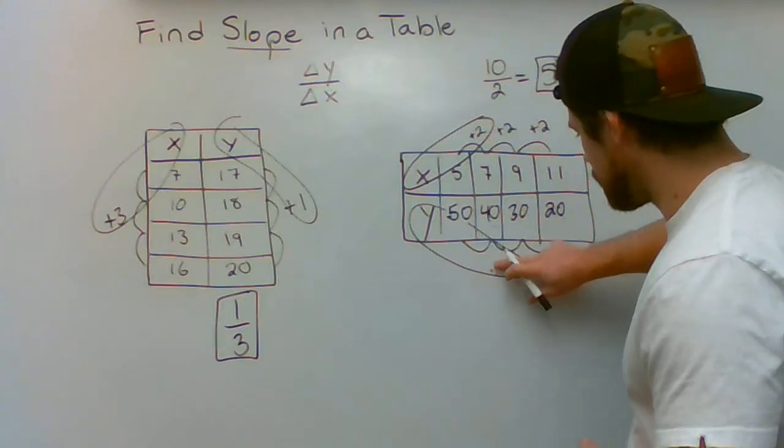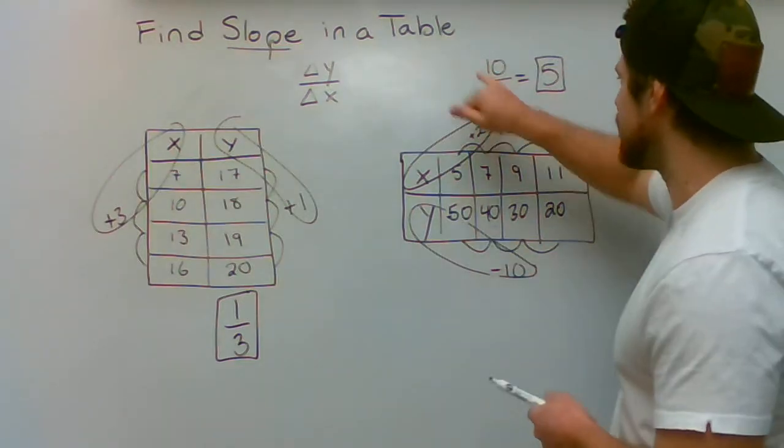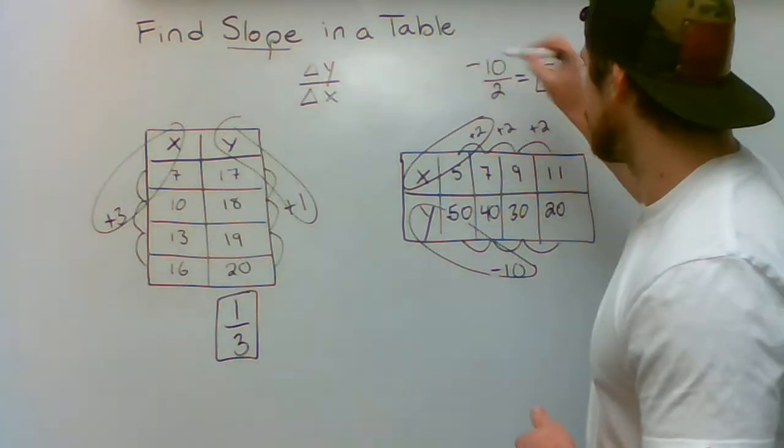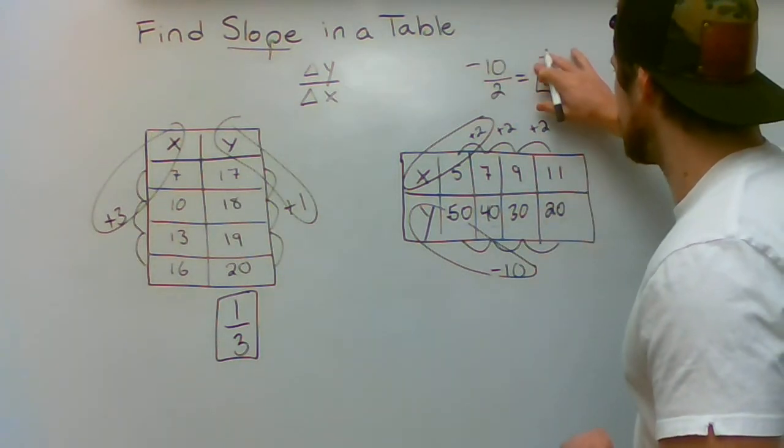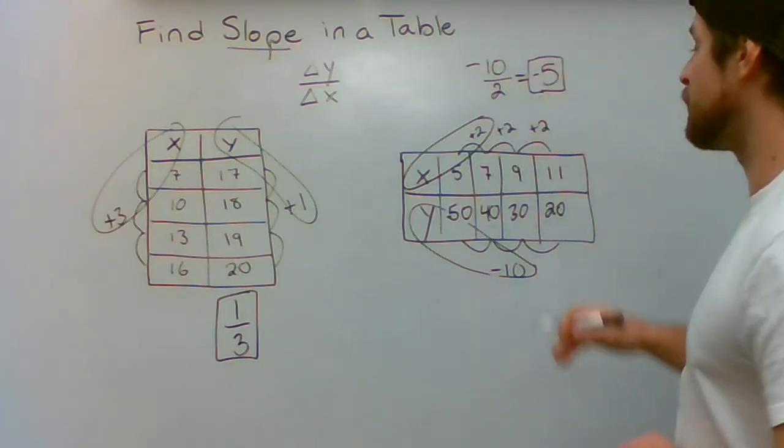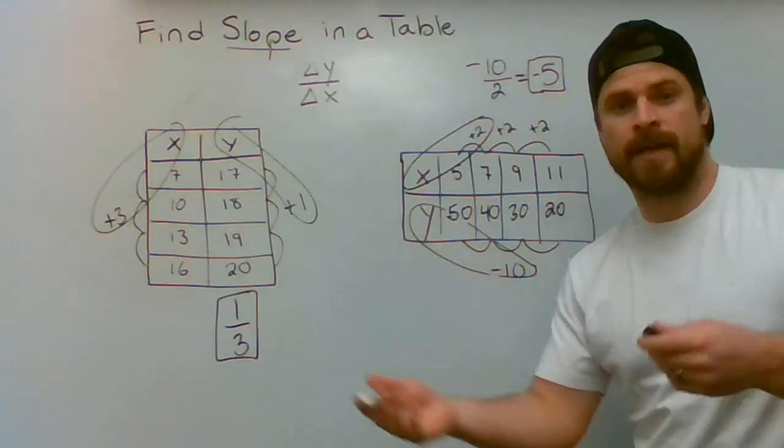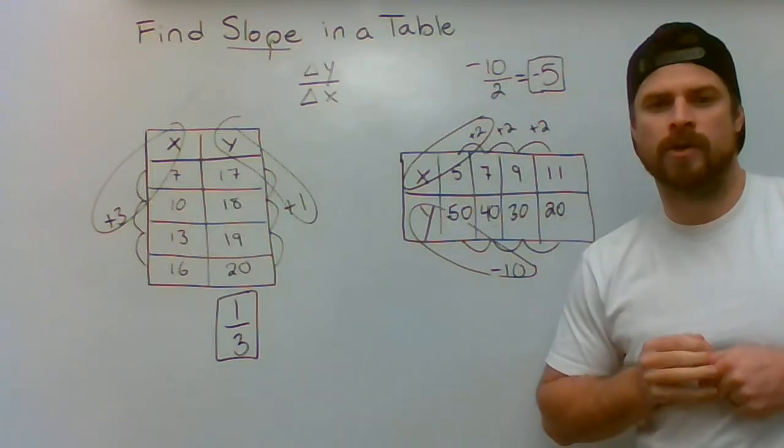Instead of going up 10, now I would be going down 10. And all that would change is now I have a negative 10 up here. Negative 10 divided by 2 would give me a negative 5. If both are negative, then a negative divided by another negative would make a positive. Something to think about when you're going through these problems.